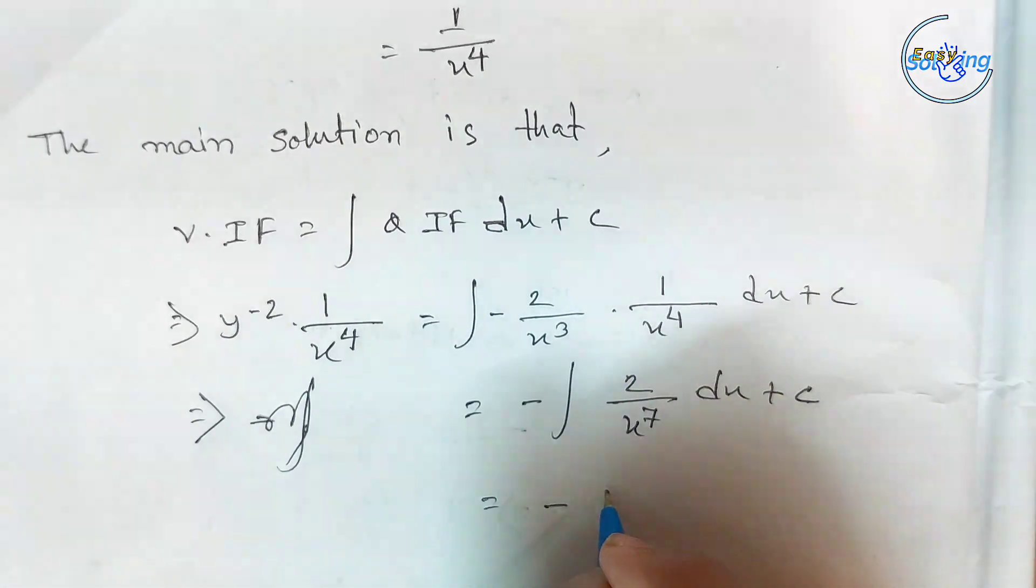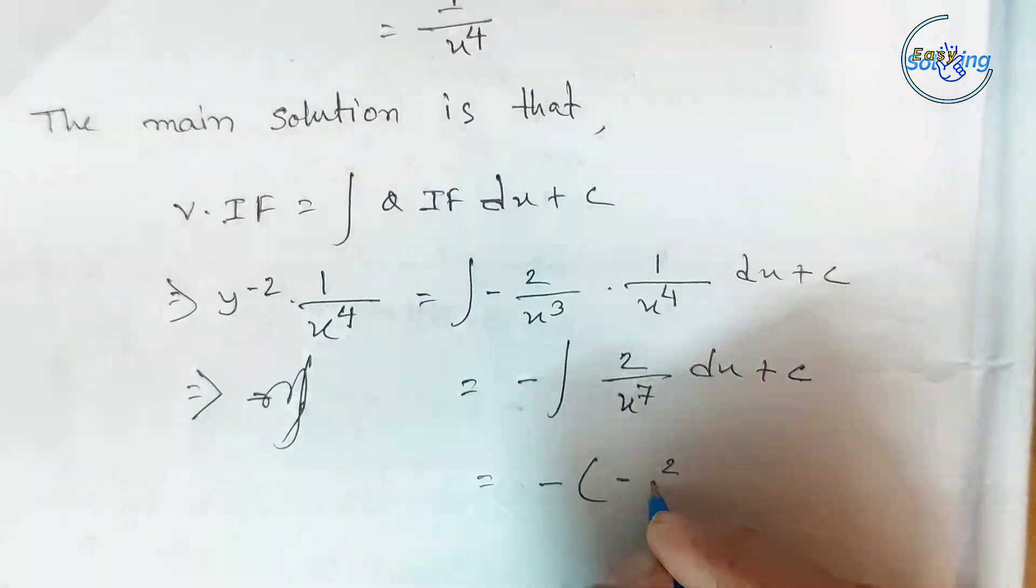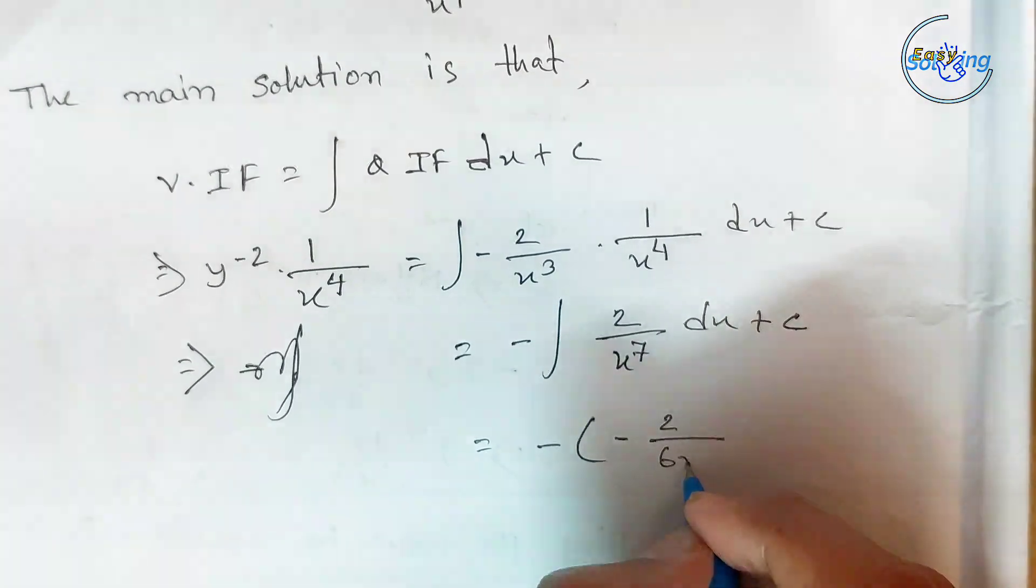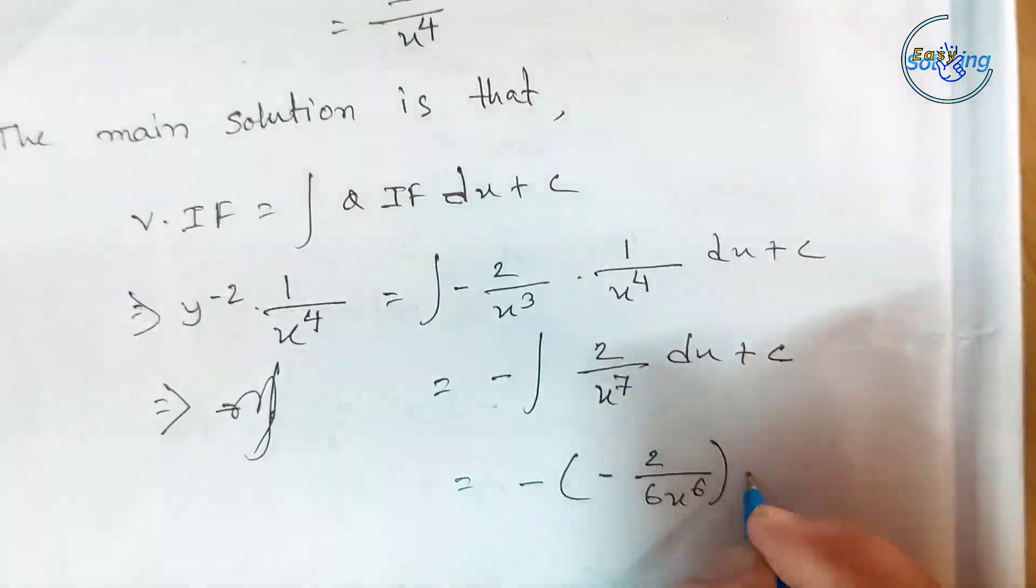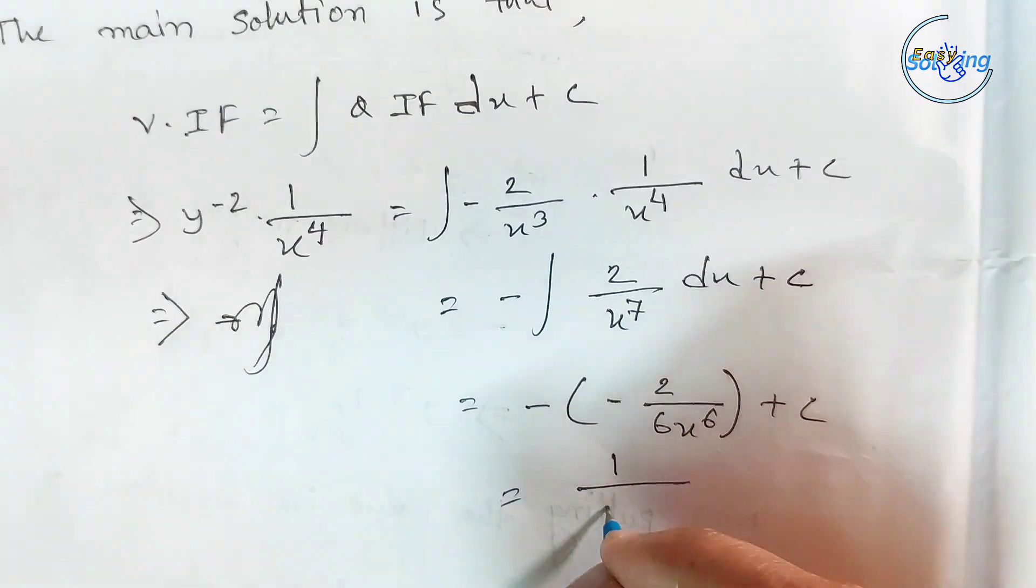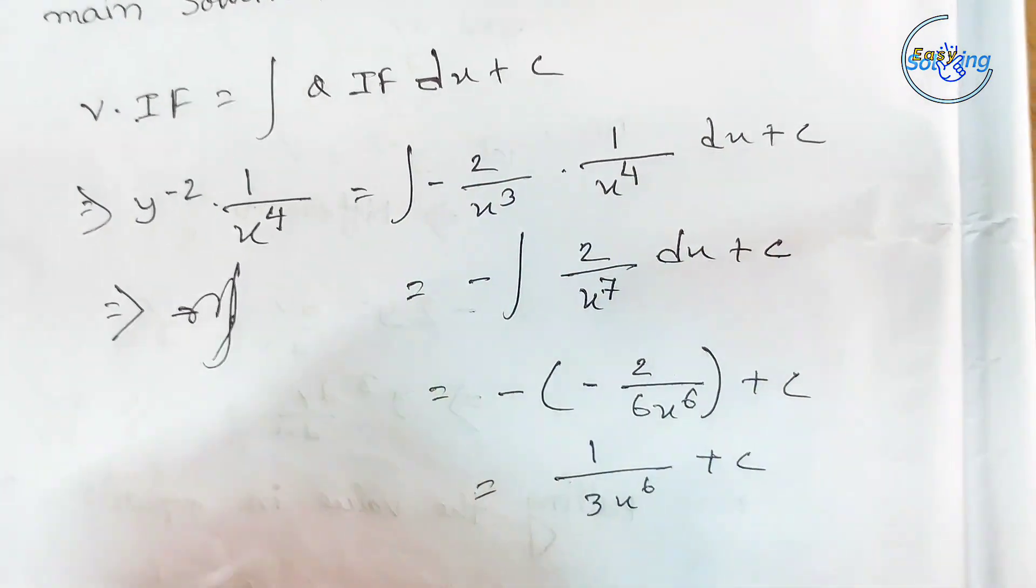Integrating: -2∫x^(-7) dx + C = -2·(x^(-6)/(-6)) + C = 2/(6x⁶) + C = 1/(3x⁶) + C.